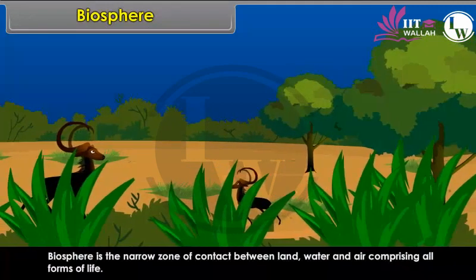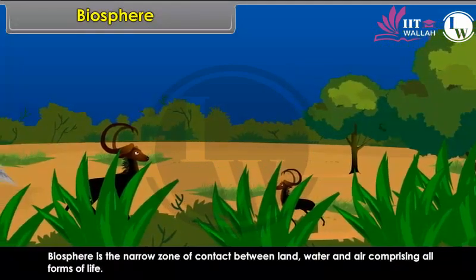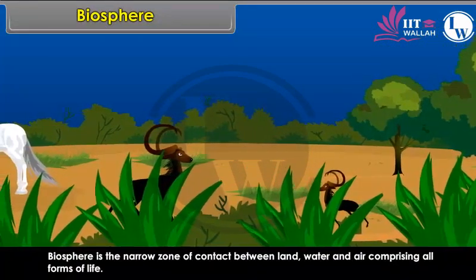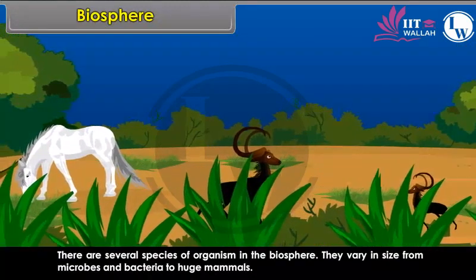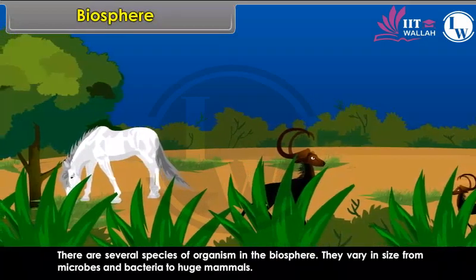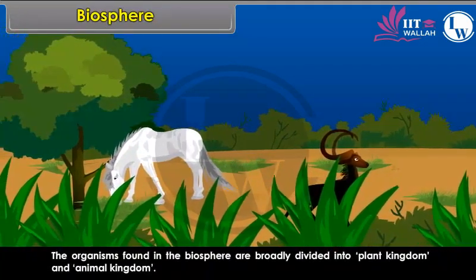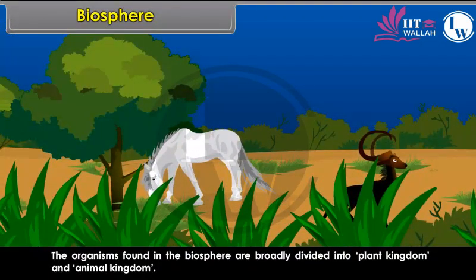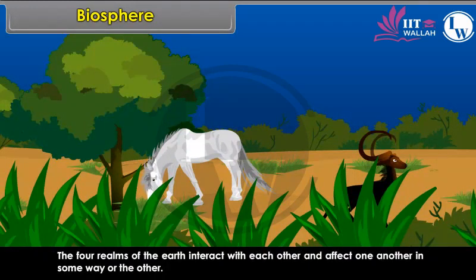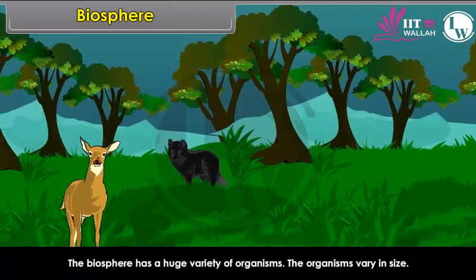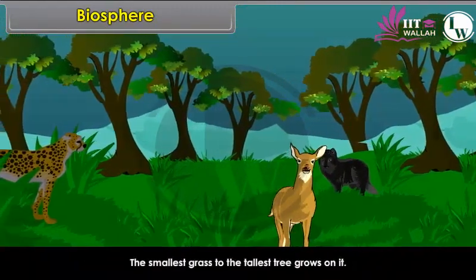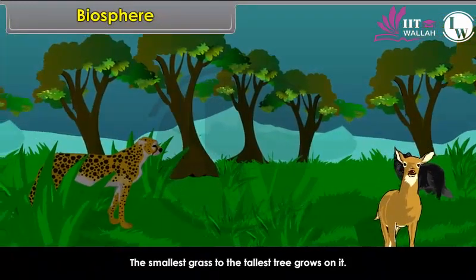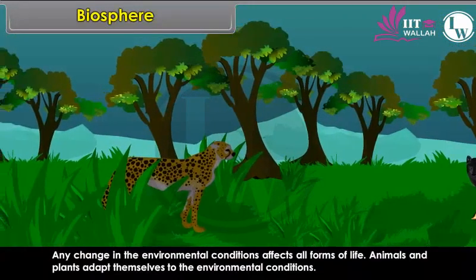The biosphere is the narrow zone of contact between land, water and air, comprising all forms of life. There are several species of organisms in the biosphere. They vary in size from microbes and bacteria to huge mammals. The organisms found in the biosphere are broadly divided into the plant kingdom and the animal kingdom. The four realms of the earth interact with each other and affect one another. The biosphere has a huge variety of organisms, from the smallest grass to the tallest tree. Any change in environmental conditions affects all forms of life.